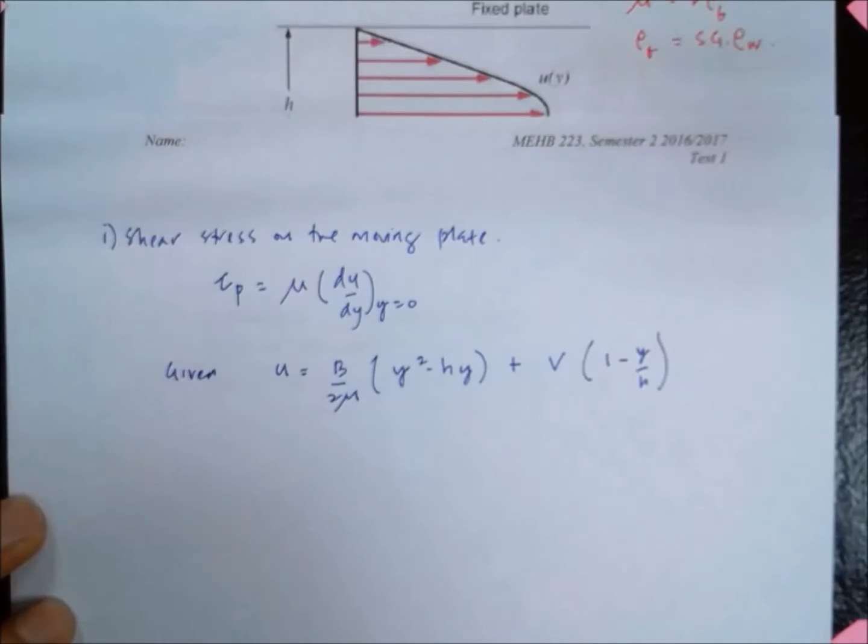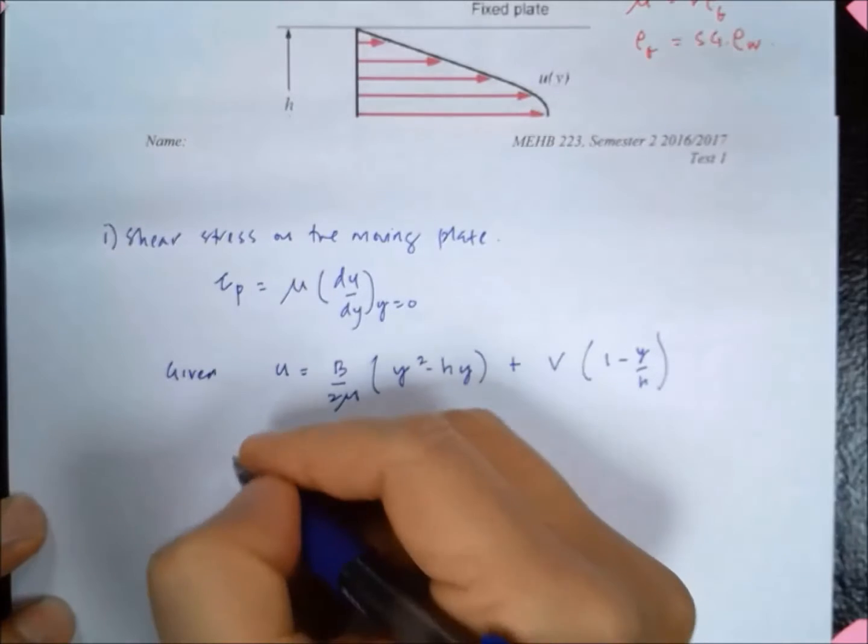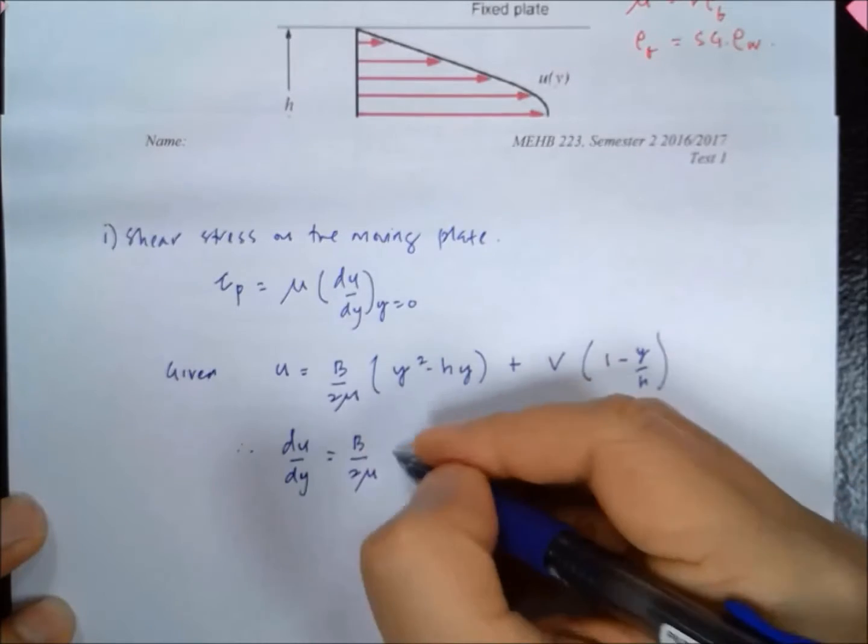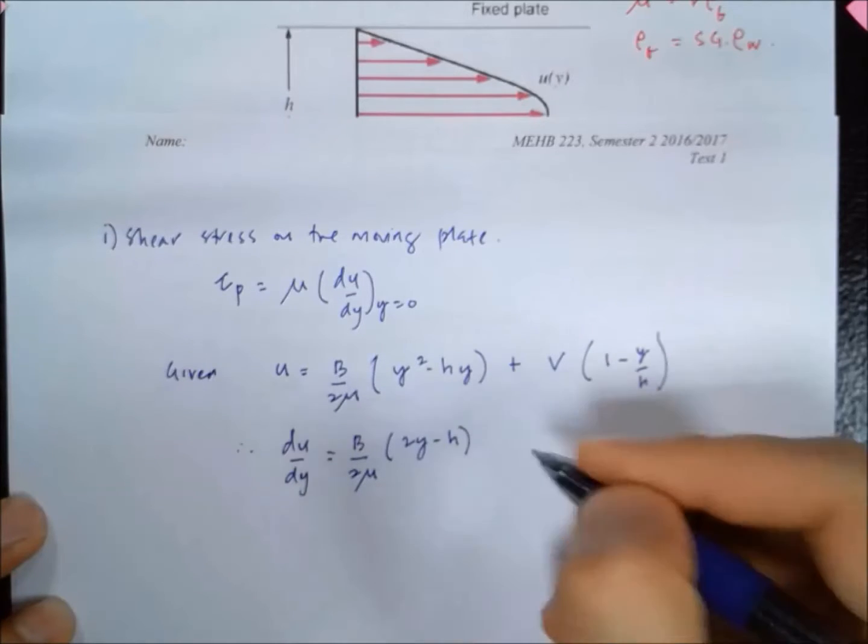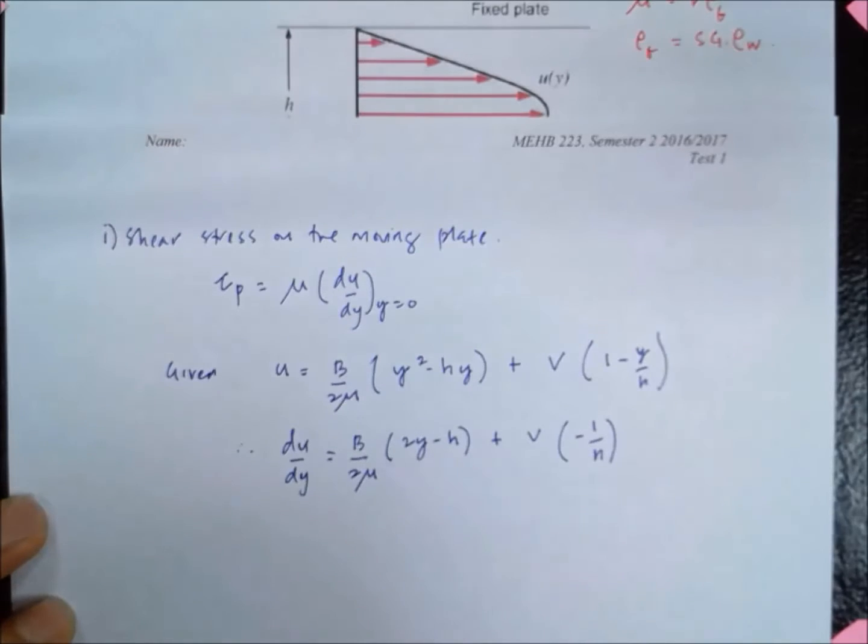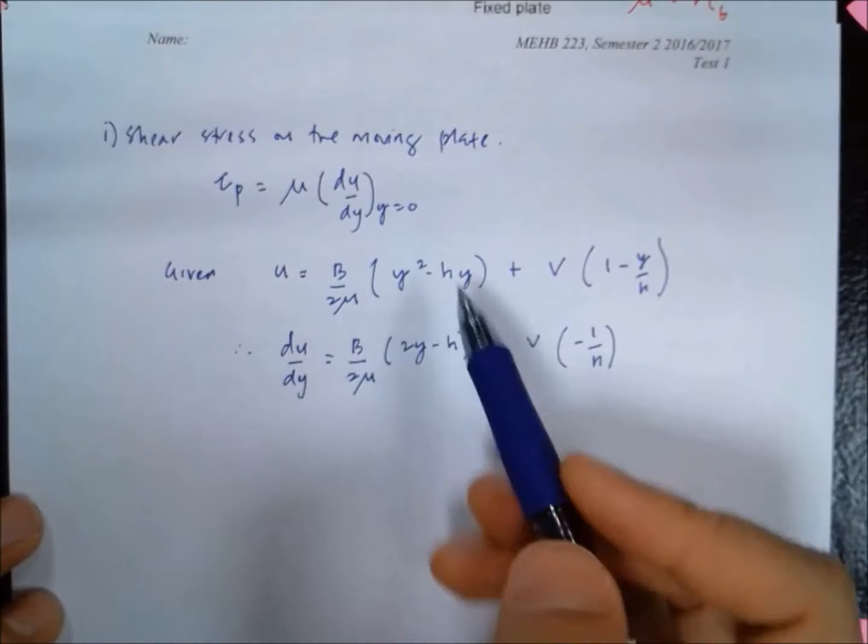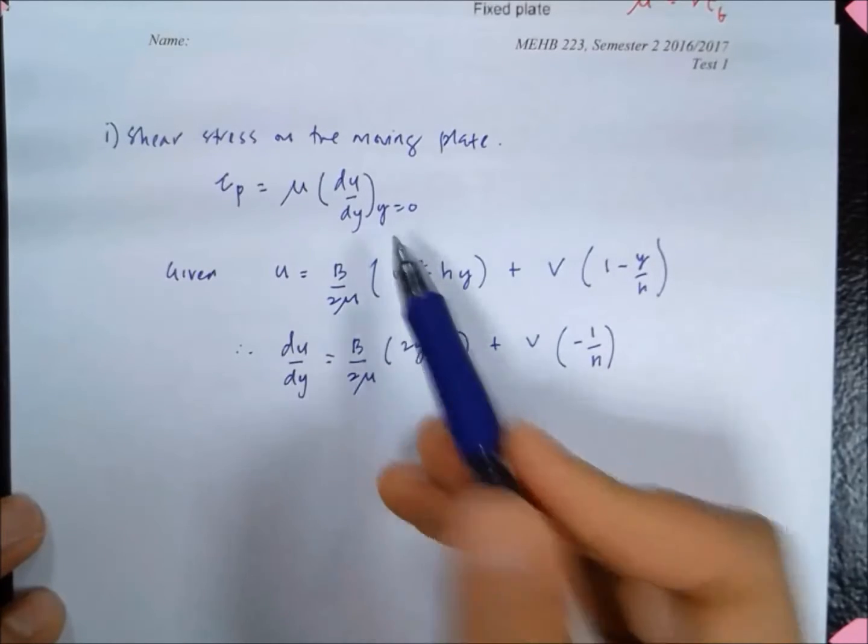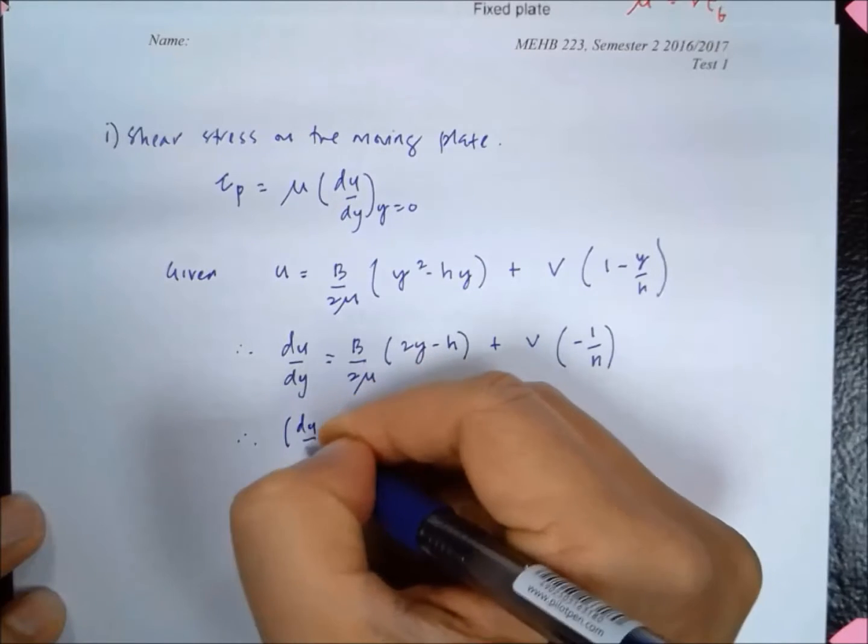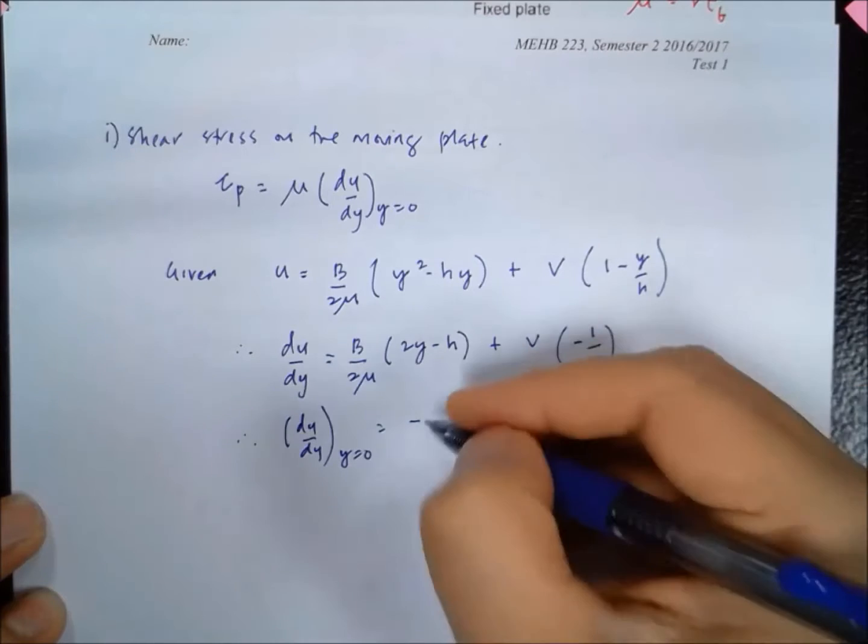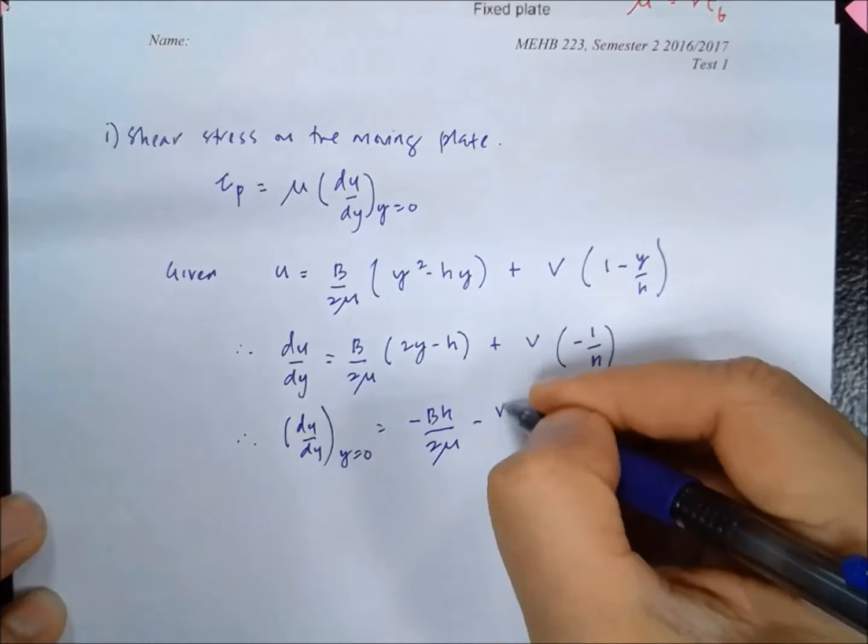So the first thing we need to do is find the velocity gradient du by dy. So we differentiate this equation. Du by dy is given by B over 2 mu times 2y minus h plus V times negative 1 over h. We need to find du by dy at y equal to 0, which is at the location of the plate we want to pull. Substituting y equals 0, we have negative B h divided by 2 mu minus V over h.